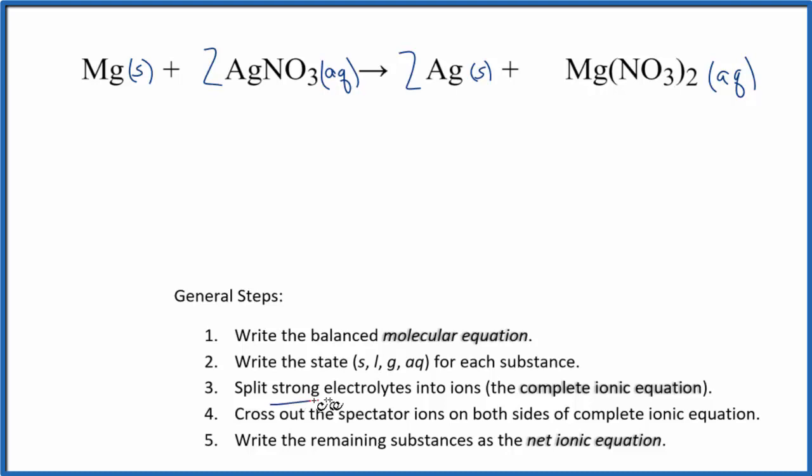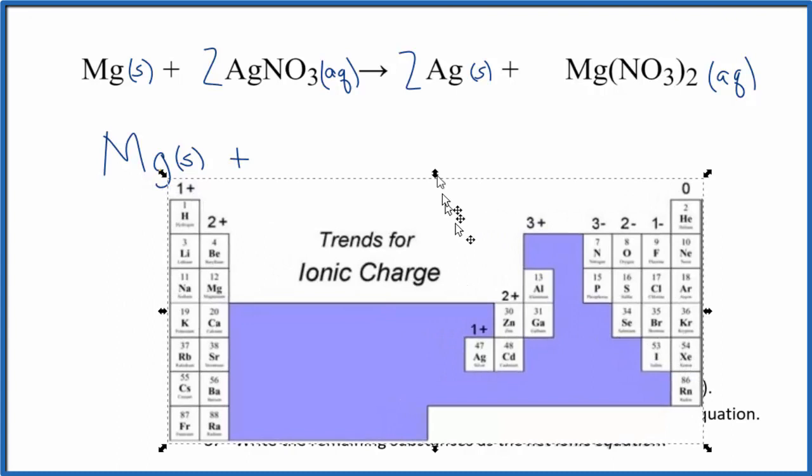Next, we'll split the strong electrolytes into their ions. So anything with that aqueous, we're going to split apart. Magnesium, that's a solid. We don't split that apart. It's only one thing anyway. And then silver nitrate. Then silver, silver's kind of an interesting one. It is a transition metal, but it's always going to be one plus. It's kind of an exception. So we know that the silver is going to have that positive charge.